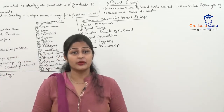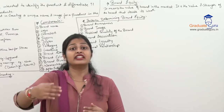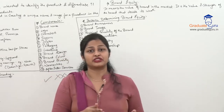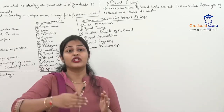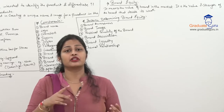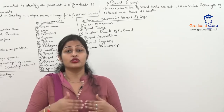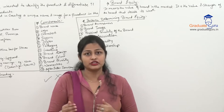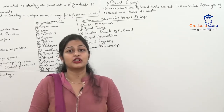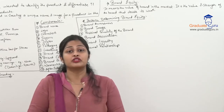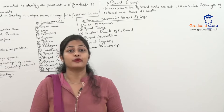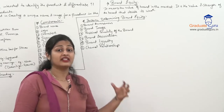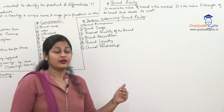The last factor is channel relationship — the relationship a company maintains with intermediaries. A product manufactured by a manufacturer reaches the ultimate consumer through intermediaries like wholesalers, retailers, agents, and distributors. If the company maintains a really positive relationship with these channel intermediaries, they put 200 percent of their effort into creating a good brand image and brand equity for the product. So ultimately it is the relationship a company maintains with its intermediaries that matters.